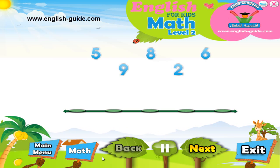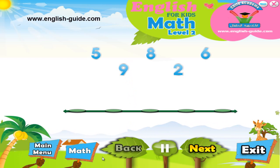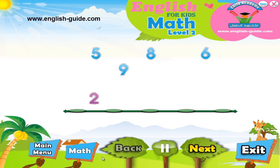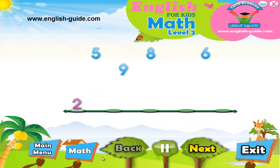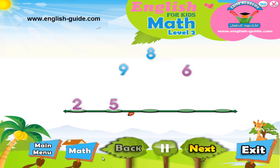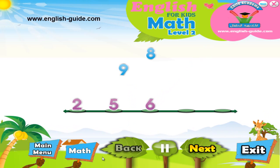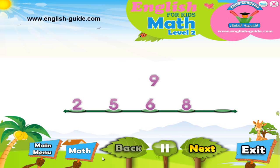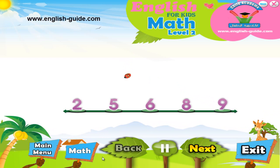For example, the smallest number here is the number two, so now we will place the number two at the beginning of our line. After this comes the number five. The number six follows closely afterwards. After the six is the number eight, and finally at the end of the line is the number nine.